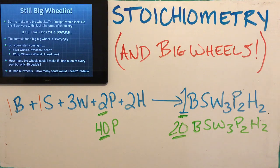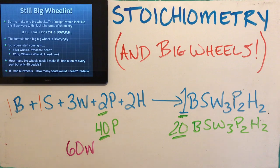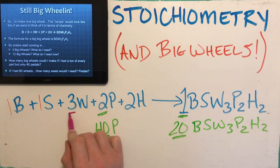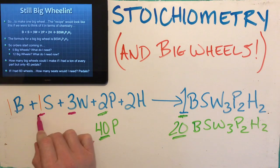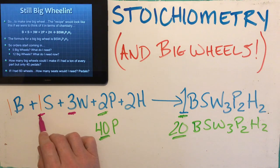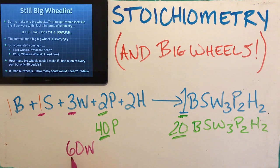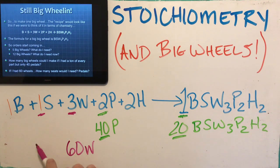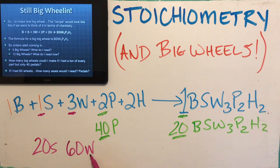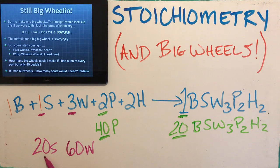What if I had 60 wheels — how many seats would I need? If I compare wheels and seats: for every three wheels I have, I need one seat. If I have 60 wheels, to turn three into one I divide by three, so I divide 60 by three. If I've got 60 wheels and the relationship is three to one, then I need 20 seats — and you'd be correct.